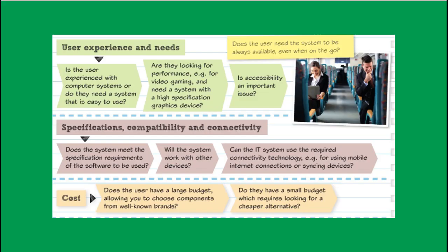The next factor you can talk about is specifications, compatibility, and connectivity. This might be more important for businesses or a person who needs certain requirements or software. For example, a graphics designer needs his graphics tablet to connect to his laptop or computer, so he needs to choose an IT system that is compatible with his PC.